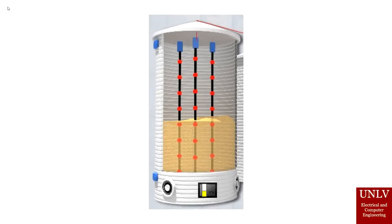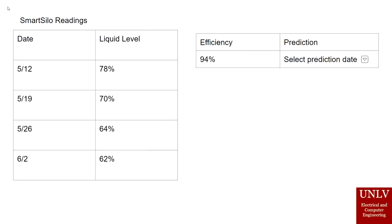There are devices that perform this exact operation in wide use today, but most simply display the current reading on a screen near the tank. With just the screen, there is no way to remotely monitor the tank. With SmartSilo, manual checking of the tank contents either by opening the tank or viewing the screen is no longer necessary. Additionally, because SmartSilo uses cloud technology, the readings can be stored and used in analytics such as efficiency and prediction calculations. We also plan for SmartSilo to be more cost efficient but still as effective as the other devices in wide use today.